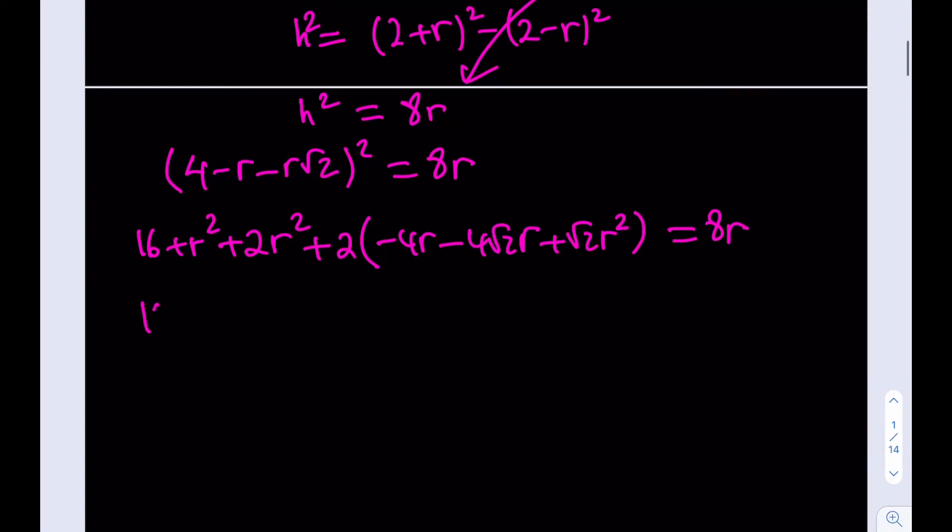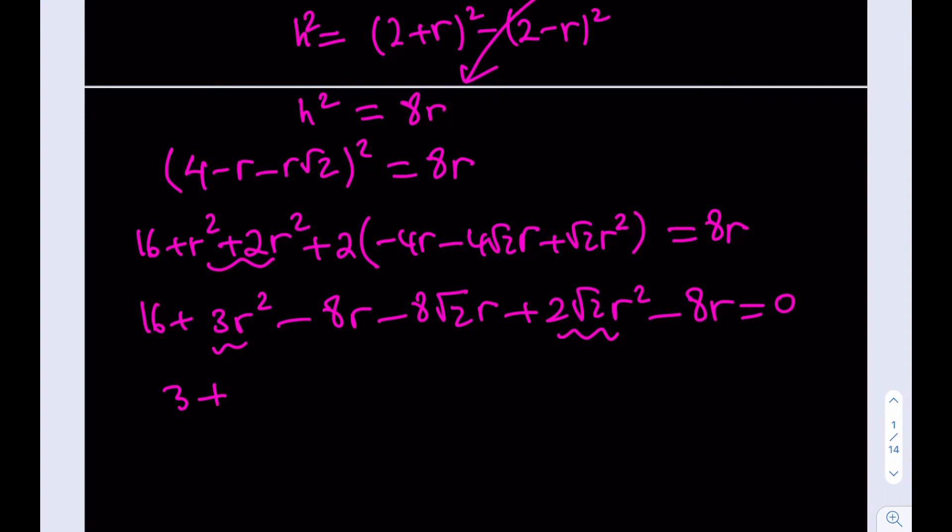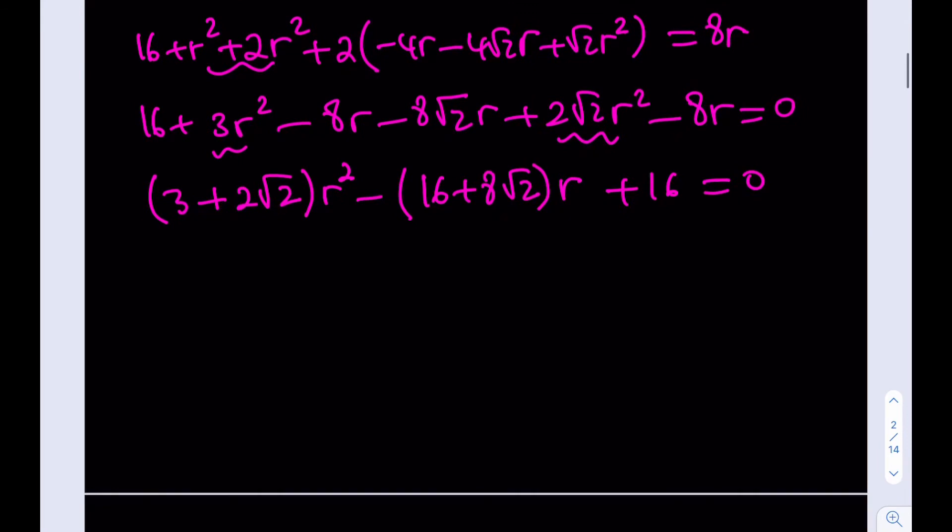And the whole thing is equal to 8r. Now, let's go ahead and distribute this. 16 plus, well, I can just combine these two. 3r² minus 8r minus 8√2 r plus 2√2 r² equals 8r. And I can just go ahead and subtract that and set the whole thing equal to 0. Now, we get a quadratic equation from here, which means that we're going to have two solutions. And we have to pick and choose which one is which. So, now I have 3r² here and 2√2 r². So, let's go ahead and put those together. (3 + 2√2)r² minus 8r minus 8r, which is minus 16, minus 8√2. So, that's going to give me something like (16 + 8√2) with a minus sign, multiply by r. And then our constant is 16.